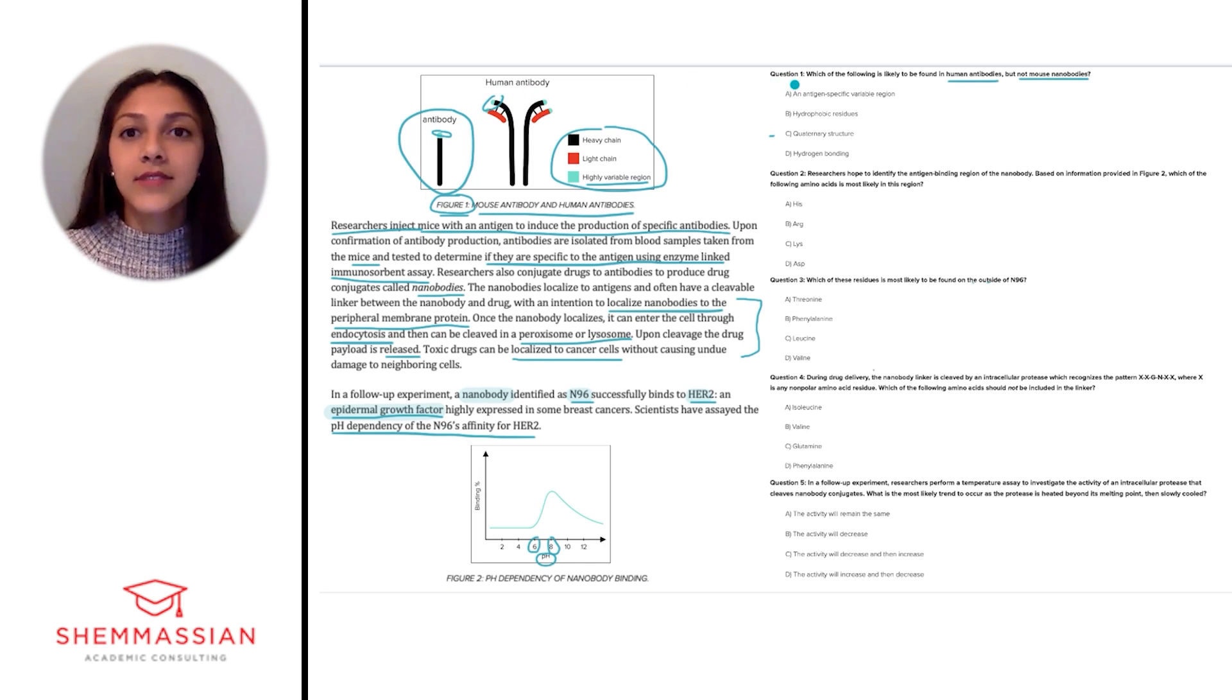They would both also likely have some amount of hydrophobic residues, and hydrogen bonding would likely contribute to some sort of secondary or tertiary structure. So this leaves us with answer choice C, quaternary structure, as the correct answer choice.